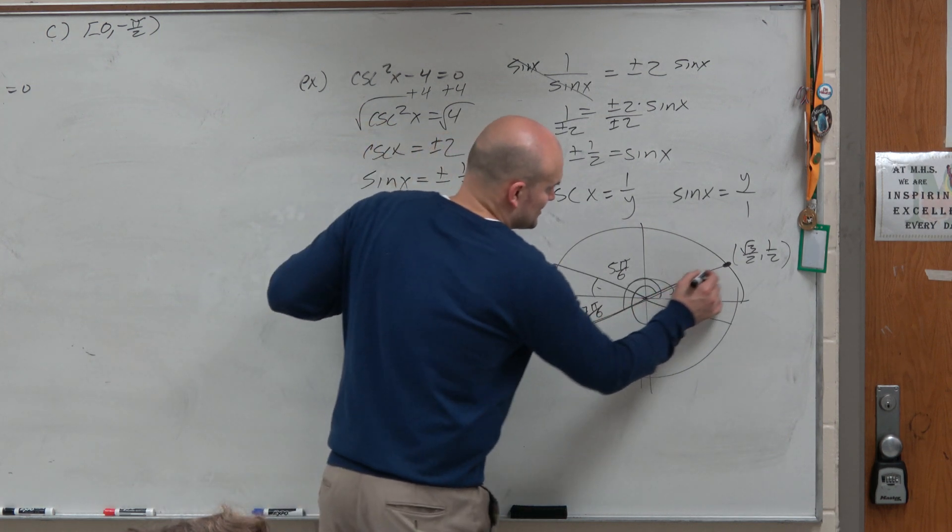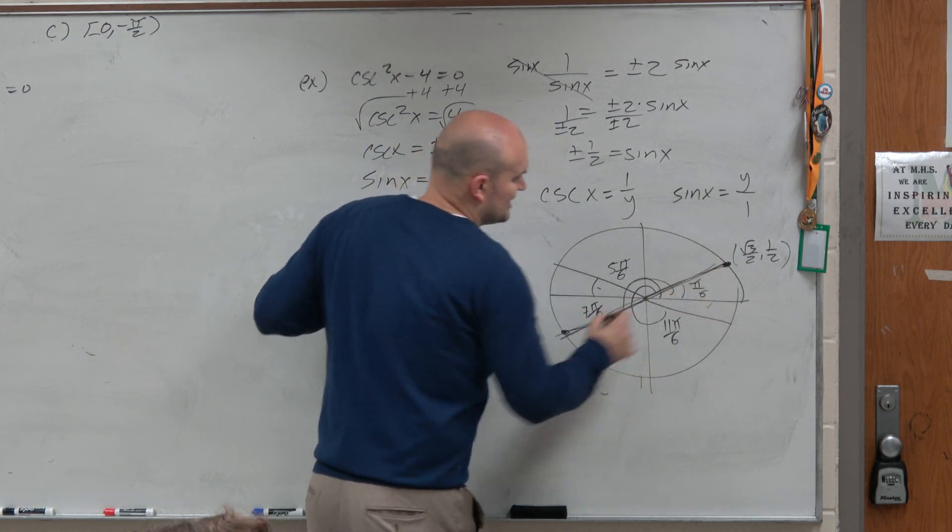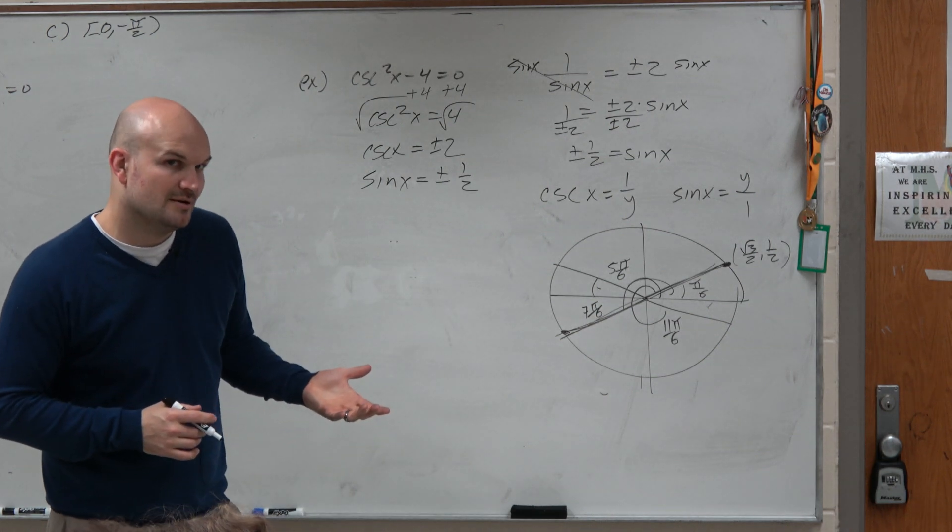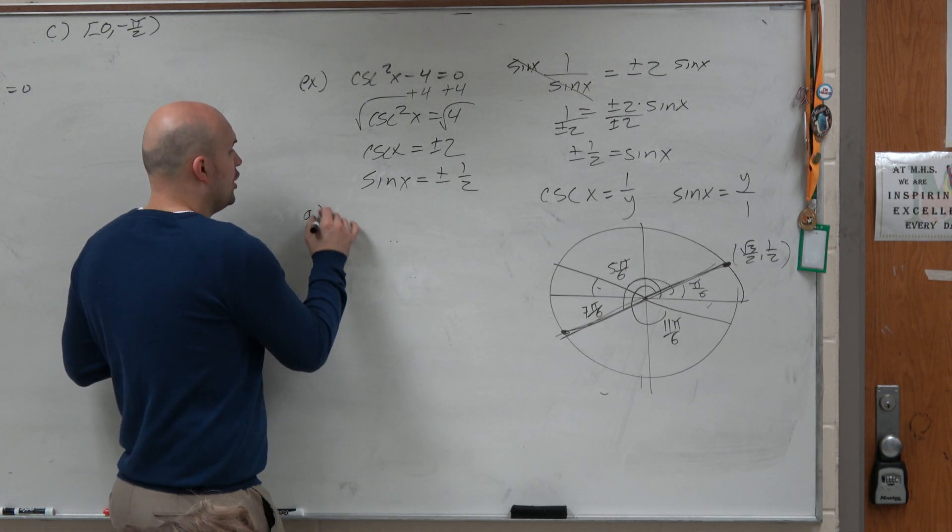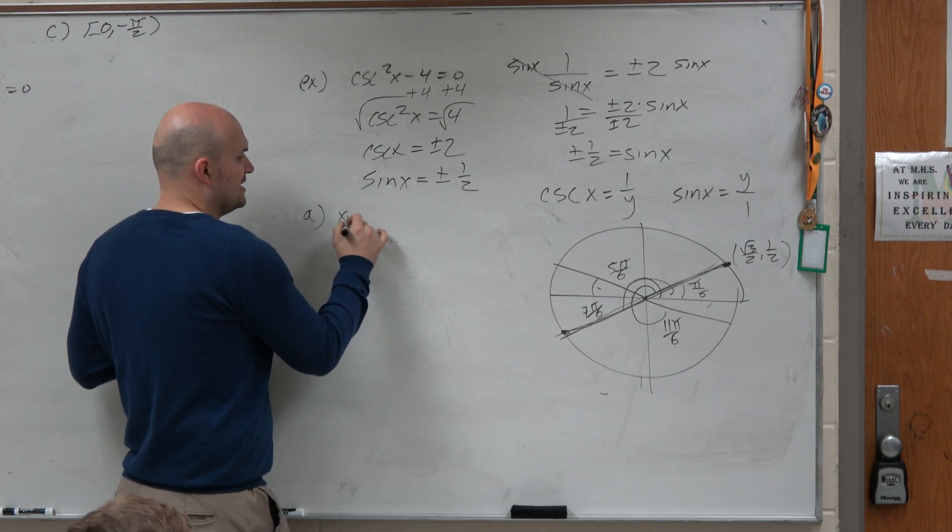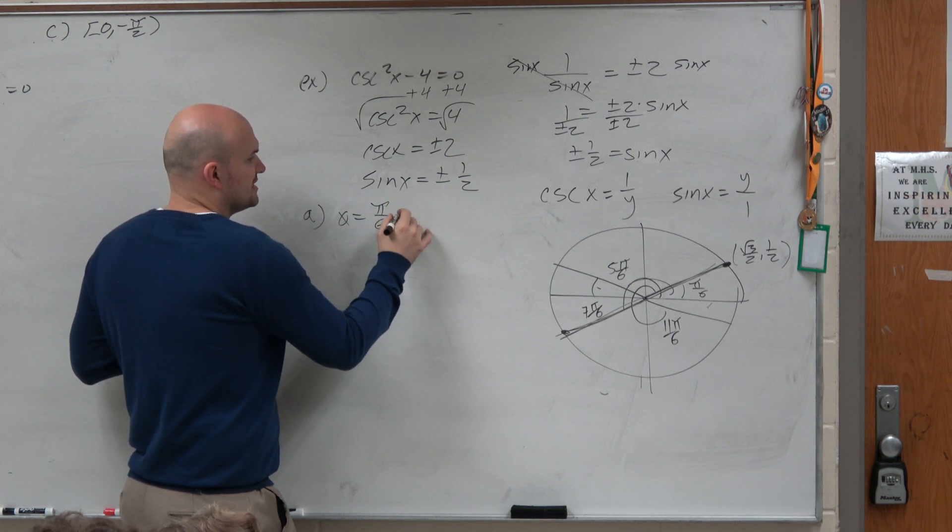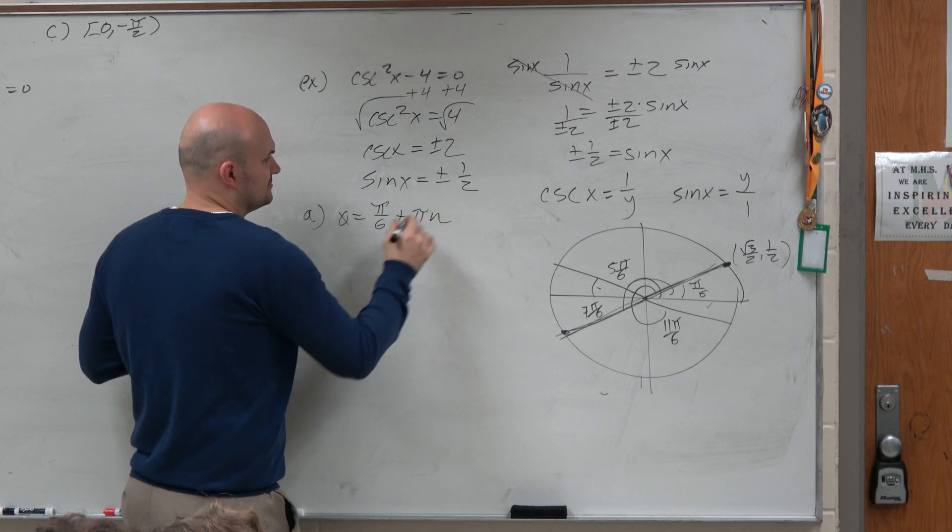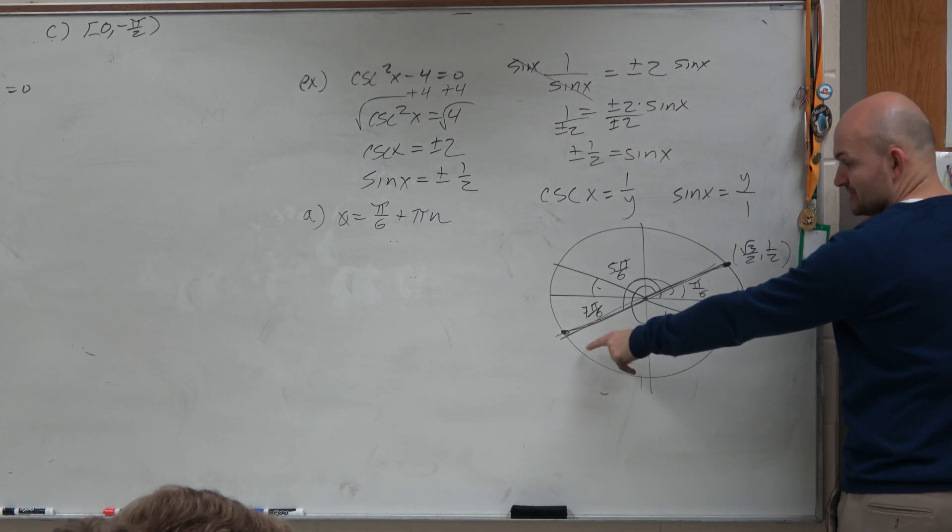So what I notice is, I have a relationship between these two answers. Wouldn't you guys agree that those are how far away from each other? So if I wanted to find all the solutions, I would just take theta equals pi over 6 plus pi n. Because if I take pi over 6, if I add pi, I get 7 pi over 6. Add it again, or subtract it, whatever.